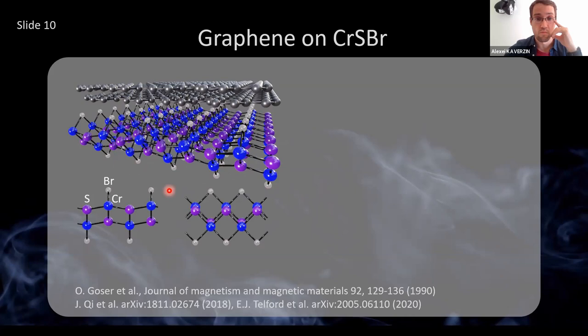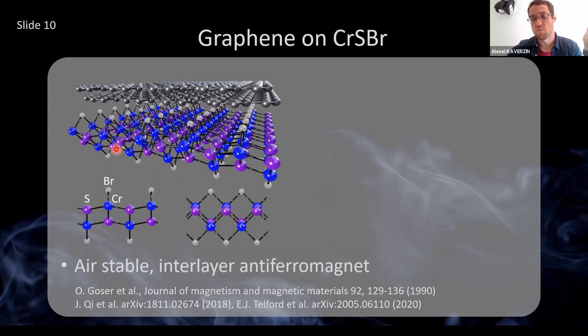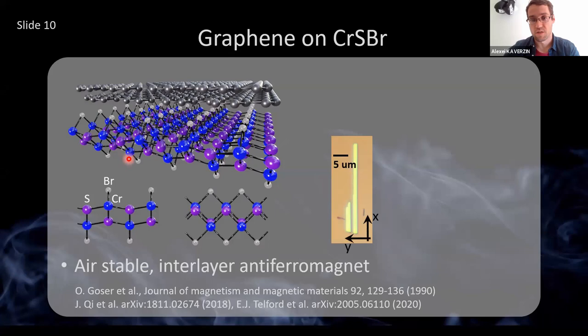Chromium is coupled via super exchange. Therefore, inside a single layer of CSB it is ferromagnetic, but from layer to layer it is anti-ferromagnetic. It's also air-stable, which is quite important from the perspective of technology. We can exfoliate it, and it gets exfoliated in a very specific shape — one dimension is always considerably larger than the other. From discrete measurements done at Columbia, we know that the easy magnetic axes are always along the short side. We can also exfoliate graphene flakes and put one on top — which is exactly what we did.